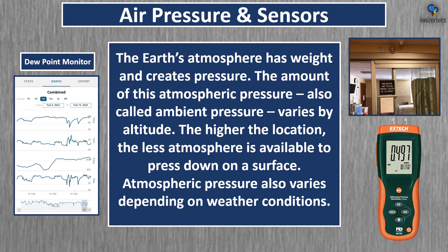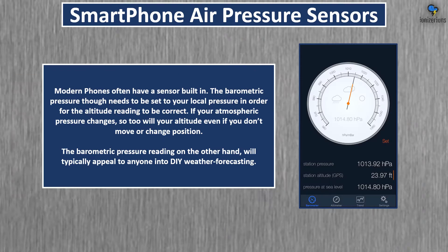Air pressure in your home and between rooms is a different air pressure. I have the dew point monitor example here because sometimes certain air sensors actually require an air pressure sensor to get an accurate number. On the right you have a type of air pressure sensor that allows you to know if a room is negative or positive pressure. Modern cell phones often have an air pressure sensor built in. The barometric pressure needs to be set to your local pressure in order for the altitude reading to be correct.